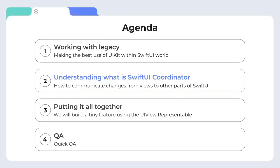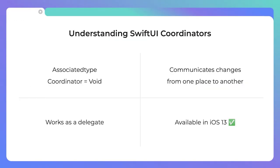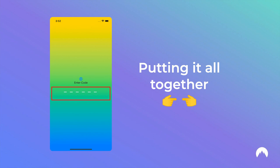Understanding SwiftUI coordinators: a coordinator is an instance within SwiftUI components that helps you communicate changes from one place to another. It is an associated type and when declared as void, it works as a delegate. It's also available for iOS state management. The main purpose here is to enhance SwiftUI and resolve bugs, using a UITextField to receive input from the user and communicating it back to SwiftUI when the user finishes inputting the two-factor authentication.